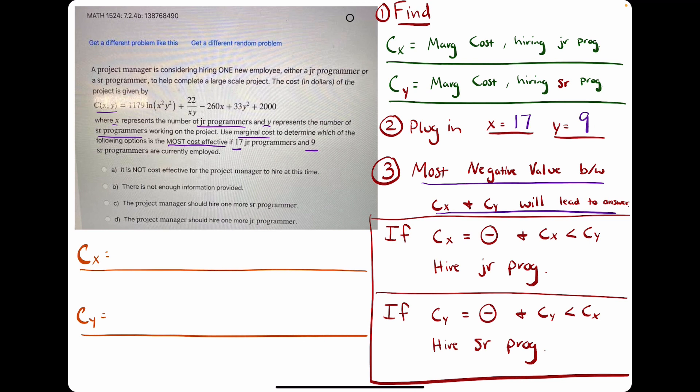And so basically we are looking for something to be more negative, because what that will tell us is, say if Cx was like negative 200 in the end, that tells us that it'll cost the company minus $200. In other words, it'll save the company $200 in order to hire, or if they hired a junior programmer, since x corresponds to junior programmer. We're looking for the more negative answer to tell us who to hire. So, let's talk through the derivatives.